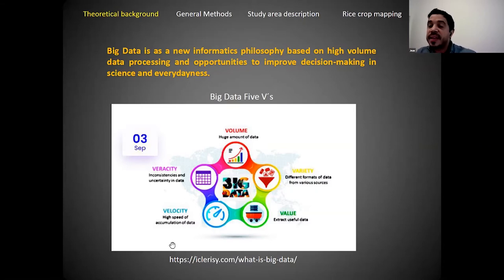Big data has a philosophy that works under five V's: volume, which refers to a huge amount of data; variety, which talks about formats of data; and value, meaning we will have information that will be useful for many problems.